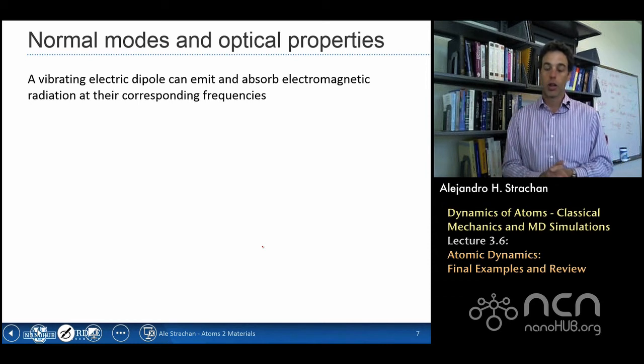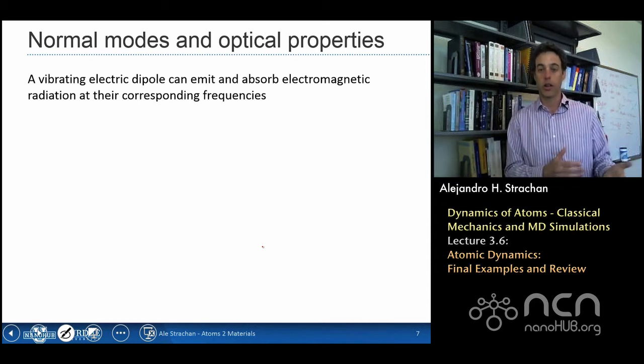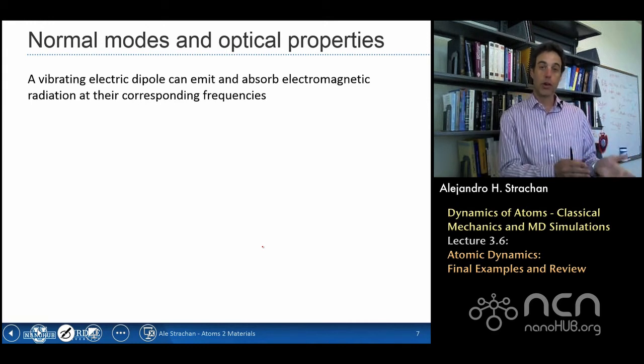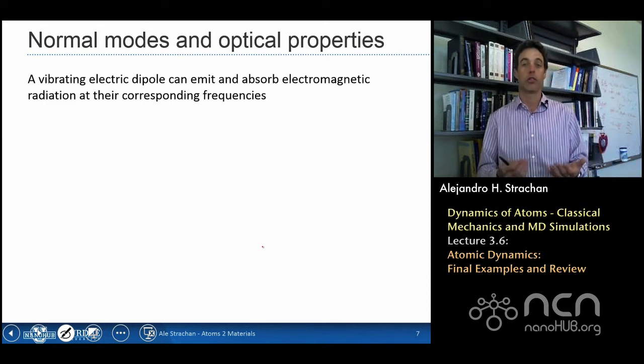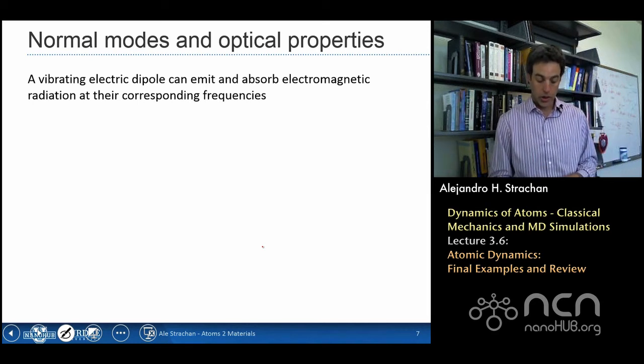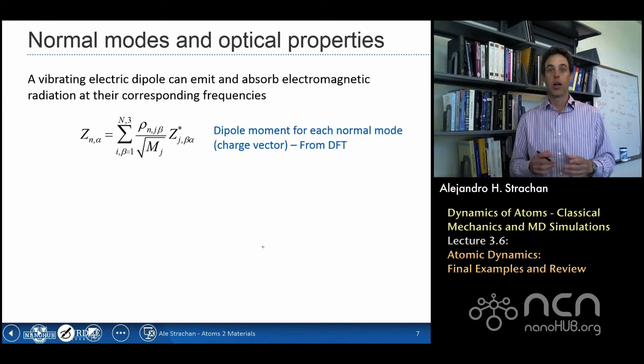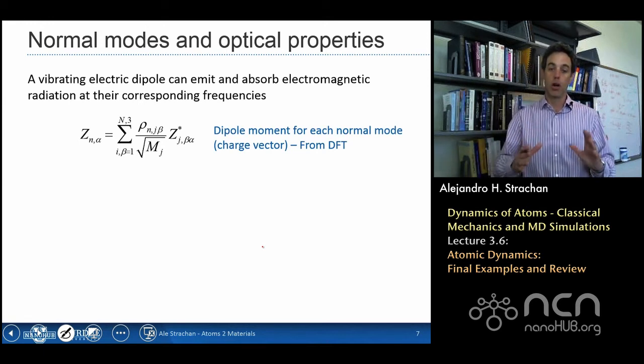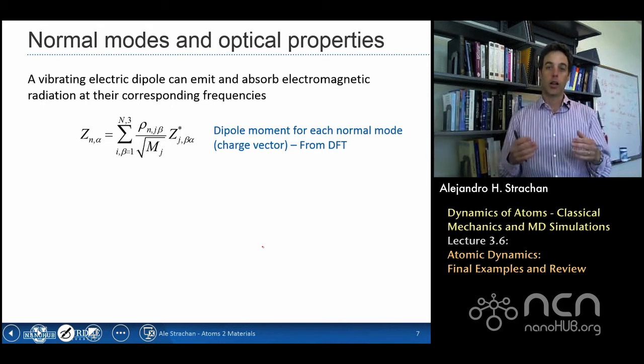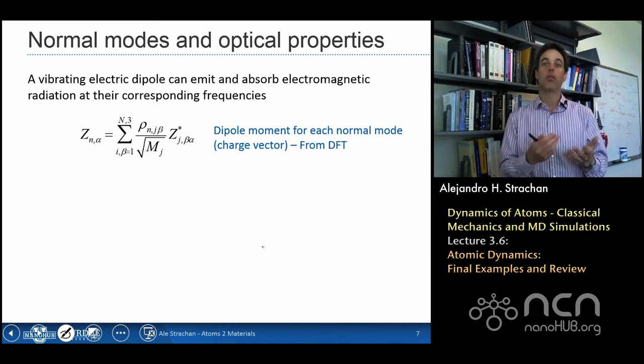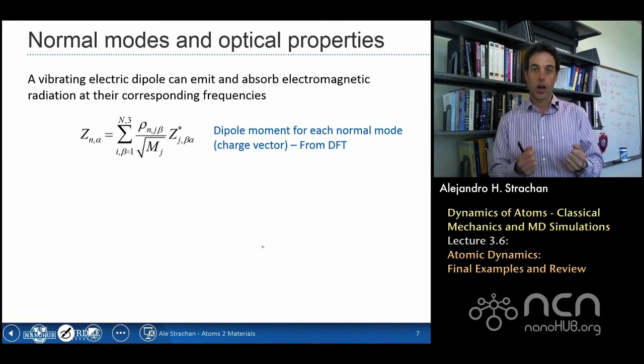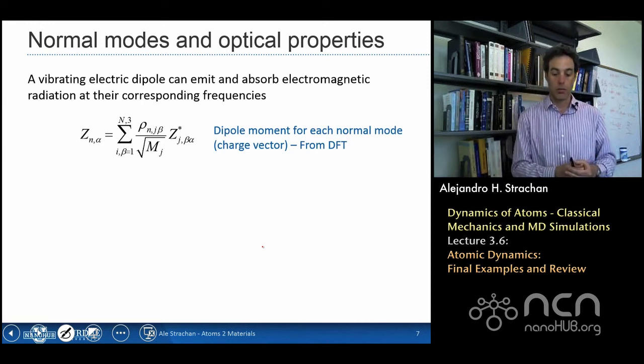So an oscillating dipole with a given frequency can emit or absorb light at the frequency that it oscillates. Most of the vibrational frequencies that we've been talking about are in the infrared, and so understanding of the vibrational frequencies of a molecule or a solid allows us to understand their optical properties in approximately the infrared region of the spectrum. To do that, the first thing I need to do, I have these normal modes, I need to understand whether these normal modes, as the molecule moves, does the dipole moment change? So I need to compute first a dipole moment strength, also called the charge vector for each of my normal modes.